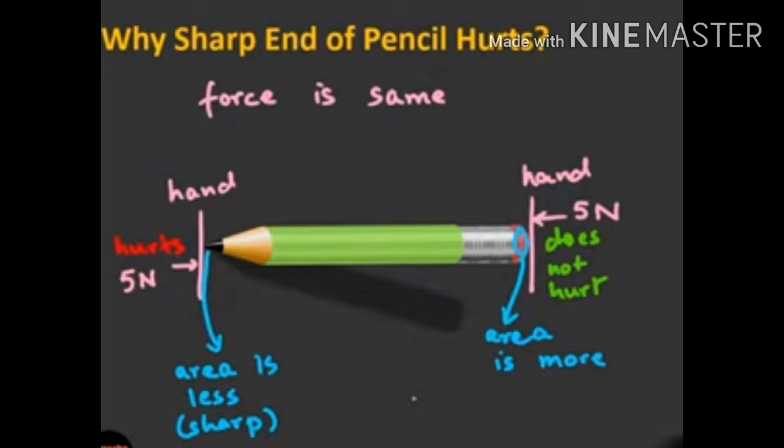Now we will take a very simple example to understand the concept of pressure. If you take a sharp pencil, if you keep your hand on the pointed end side, you will not get hurt. And if you apply the same force from both sides, suppose you have 5 Newton force on both sides, same force, but the pointed end of the pencil hurts and the other blunt end does not hurt.